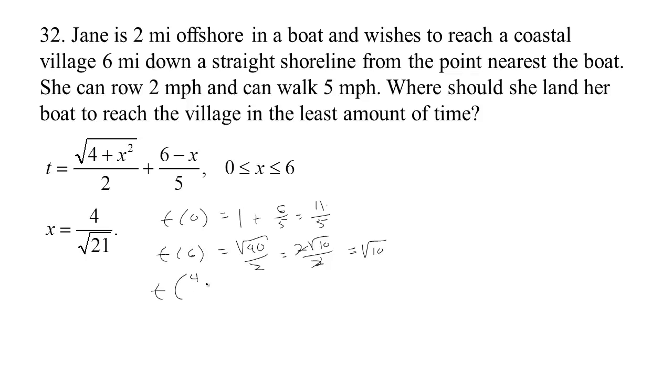Now, the last case was at our critical point, four over root 21. Let's plug that in and see what we get for our time. So we have x squared, which would be 16 over 21, plus four. Four is 84 over 21. So we have the square root of 100 over 21 plus six fifths here and minus x over five, minus four over five root 21. Now, what we need to do is simplify this so we can see if this is indeed the shortest time. I kind of suspect it is, but this would be ten over root 21 divided by two, which would be five over root 21. And then we have the six fifths. And then we have minus four over five root 21.